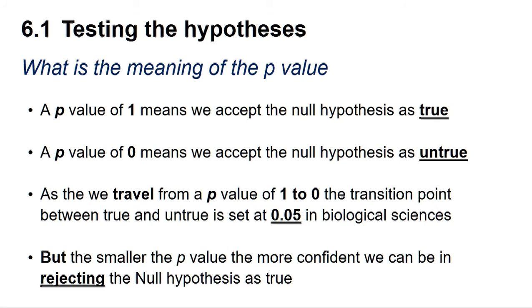The smaller the P value below 0.05, the more confident we can be in rejecting the null hypothesis.